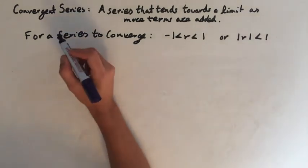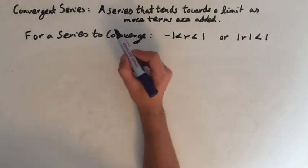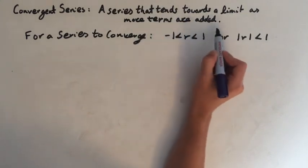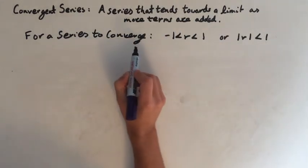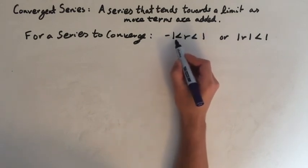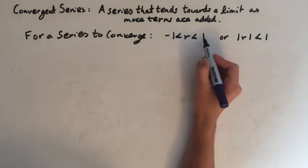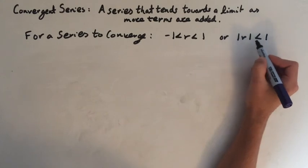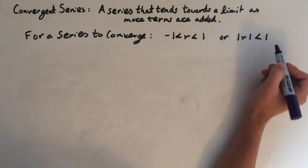I've written out the definition of a converging series here. This is a series that tends towards a limit as more terms are added. There's only one condition for a series to converge and that is that the ratio is bigger than minus one and smaller than one, or the absolute value of r or the modulus of r is less than one.